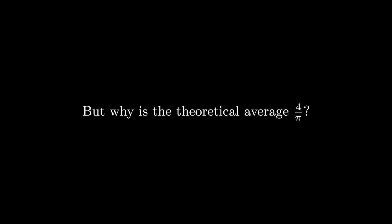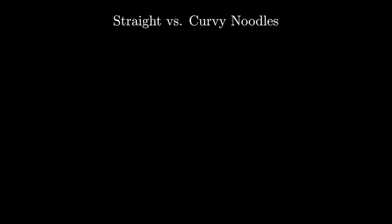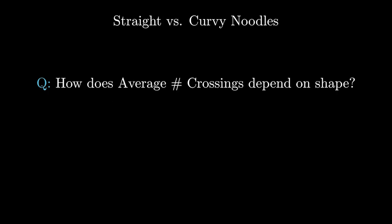The next thing we have to explain is why the theoretical average is four over pi. To see this, we are going to compare straight noodles to curvy noodles. The most natural question to ask here is, how does the average number of crossings depend on the shape of the noodle? The surprising answer is that it only depends on the length of the noodle.